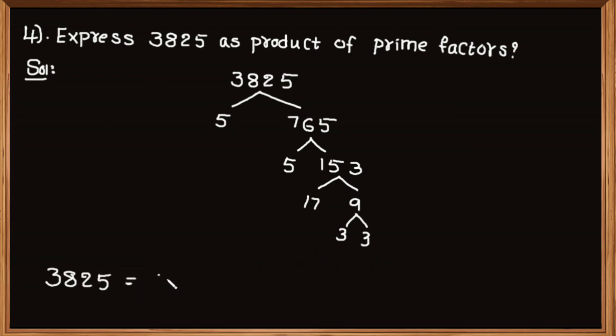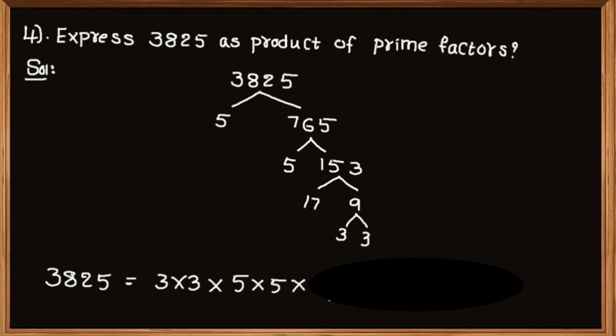Finally, 3825 can be factorized as 3 multiplied by 3 multiplied by 5 multiplied by 5 multiplied by 17, that is equal to 3 squared multiplied by 5 squared multiplied by 17.